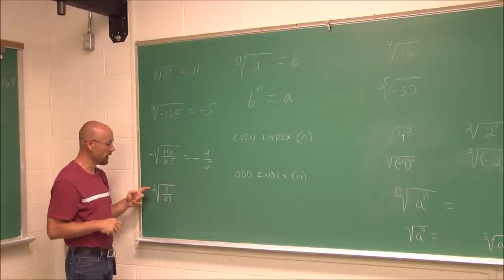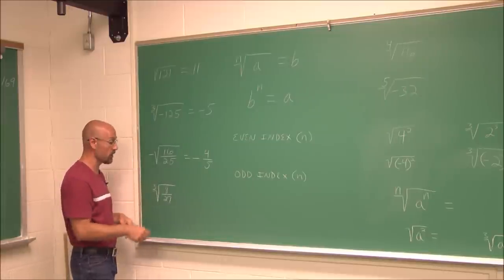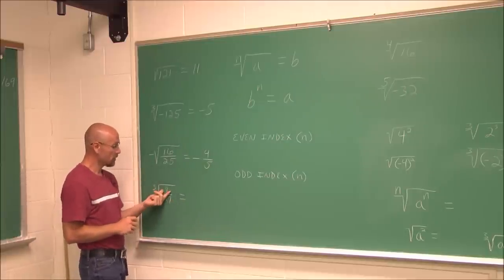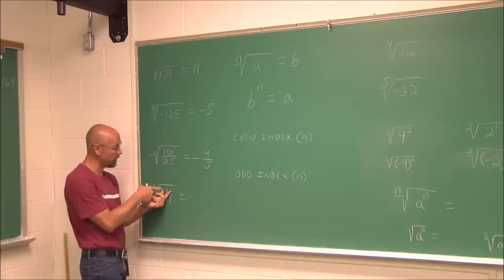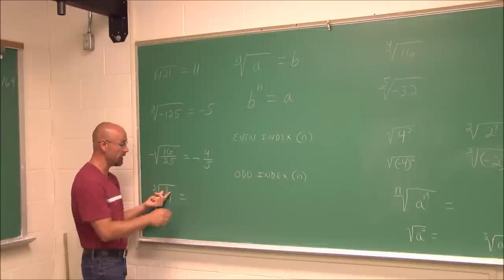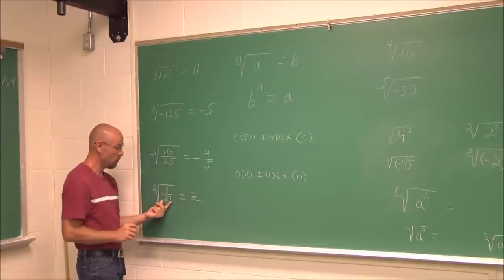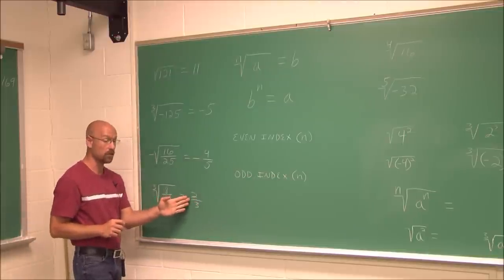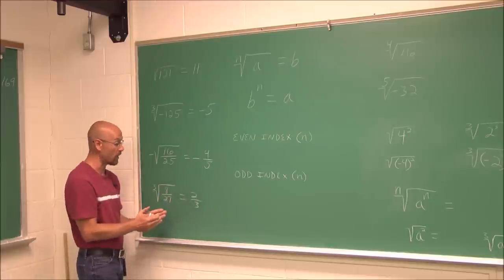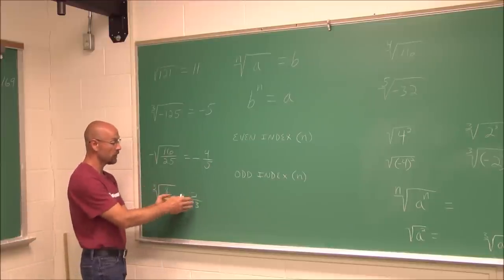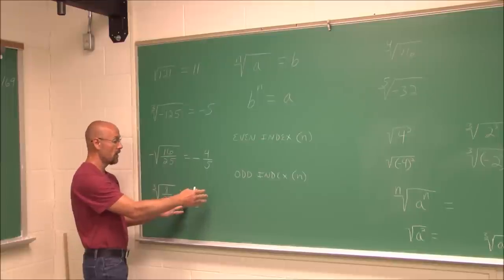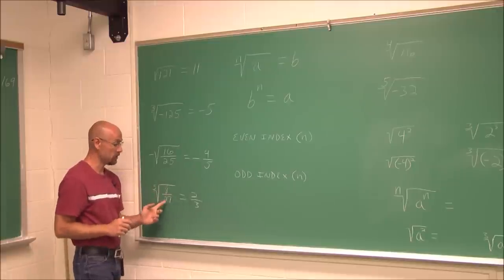Here we have the cube root of 8/27. Both values are positive, so I know I'm dealing with a positive value since this index is odd. What number cubed is 8? That would be 2. What number cubed is 27? That would be 3. So the answer is 2/3. We can check by raising to the third power: 2/3 times 2/3 is 4/9, times 2/3 gives 8/27.